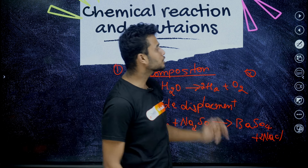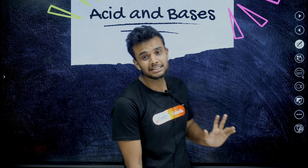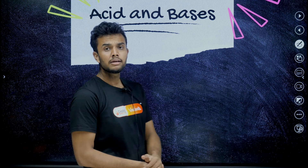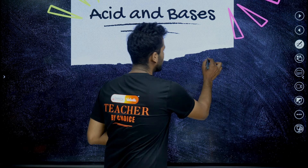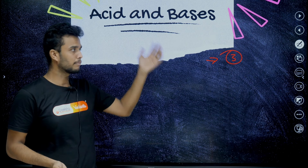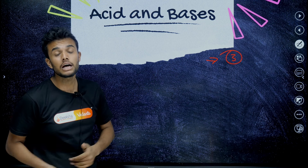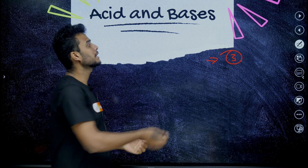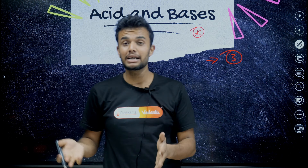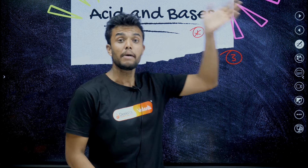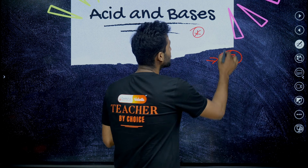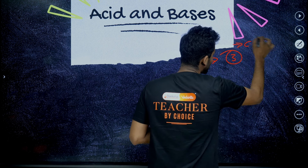Next is the chapter on acids, bases, and salts. The weightage for this chapter is only three marks, but it is also linked with other chapters. For example, acid reactions with metals are important in metals and non-metals as well. Most of the time, case-based questions are asked from this unit.